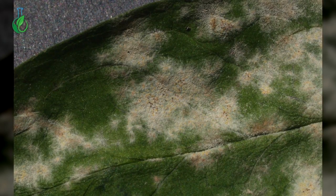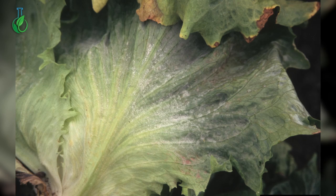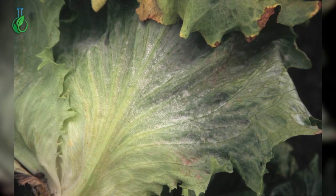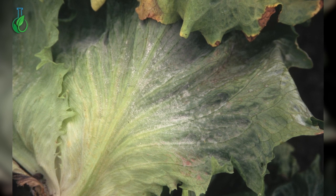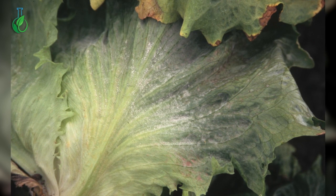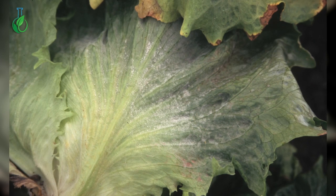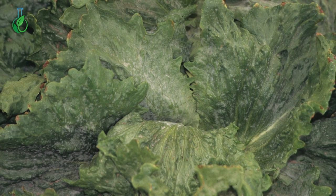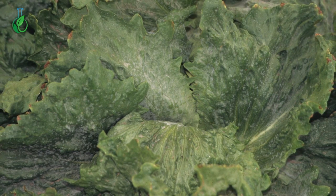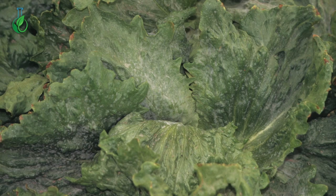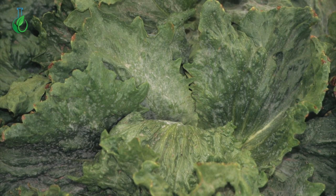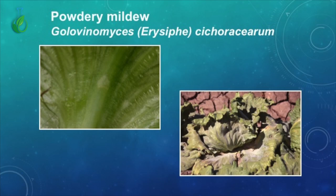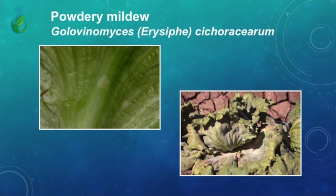Infected spores produce visible symptoms which initially appear as small circular white powdery colonies on both the upper and lower leaf surfaces. Over time these powdery growths enlarge, eventually merge, and can virtually cover the entire leaf. Infection occurs first on the oldest lower leaves, then proceeds to involve more of the lettuce plant as it approaches maturity.